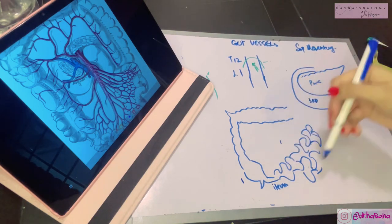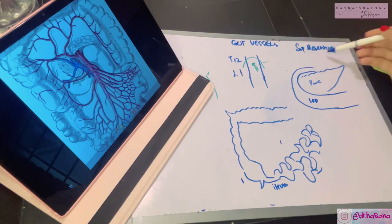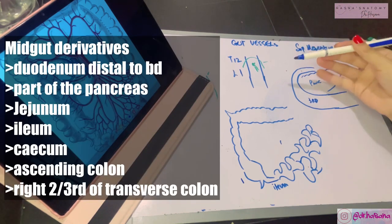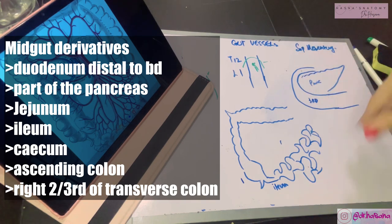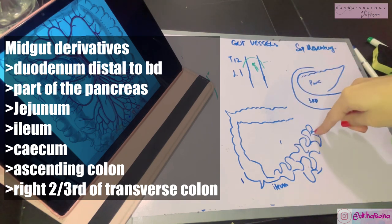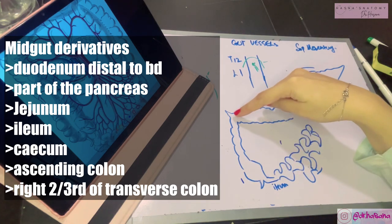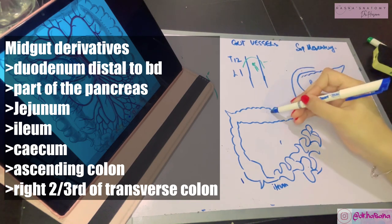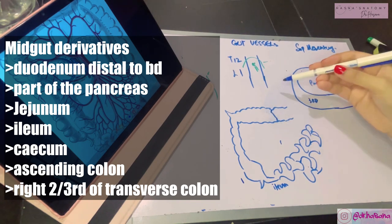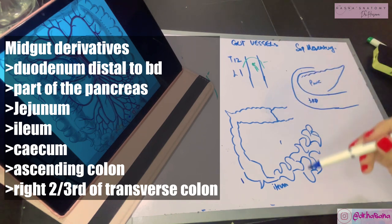The superior mesenteric artery supplies the derivatives of the midgut. These derivatives include the duodenum after the opening of the bile duct, the rest of the small intestine including the jejunum and ileum, the cecum, ascending colon, and the right two-thirds of the transverse colon. From that cutoff point, the hindgut derivatives are supplied by the inferior mesenteric artery.